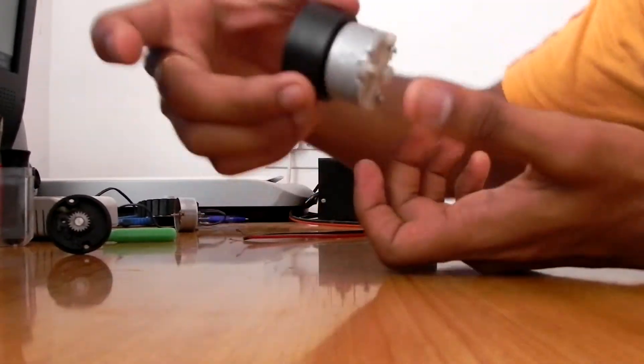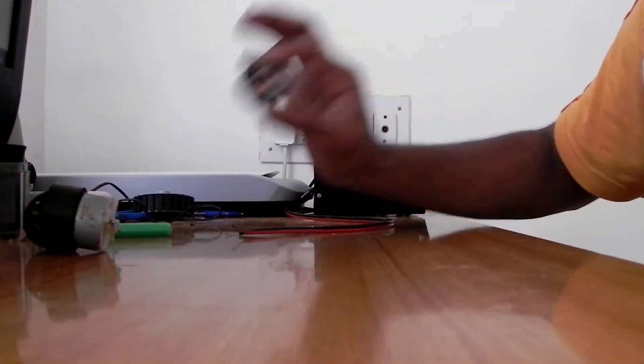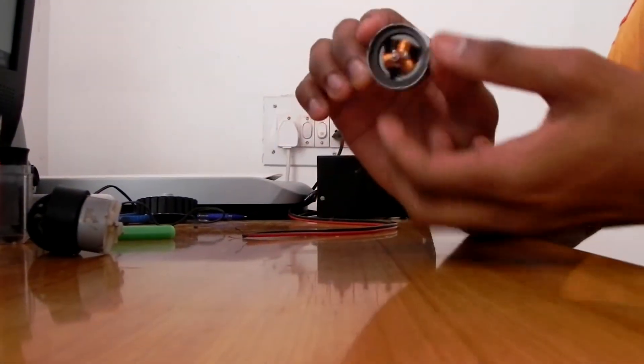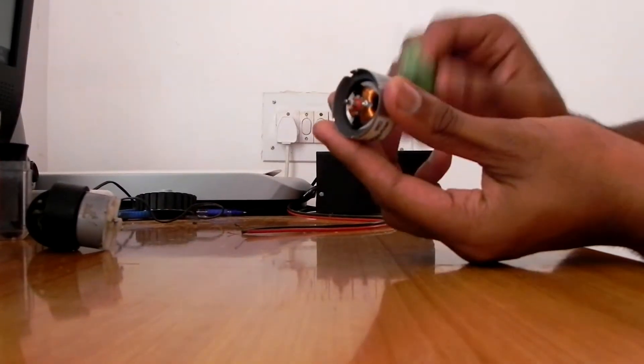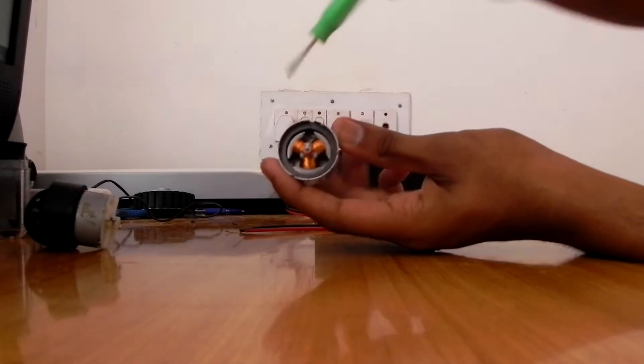These are the gears this box contains, but what does this other box contain? Now let me show you the damaged 3.5 RPM motor which I opened up as it was waste for me.